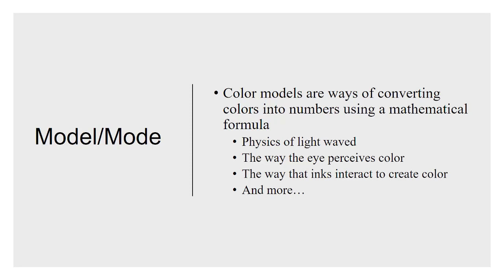A color model is simply a way of describing colors as numbers based on a mathematical formula. A mode is just the setting in Photoshop that determines what model is being used. Those mathematical models are based on a number of things: how the eye perceives color, how light works, and the way that inks interact on paper to create color.